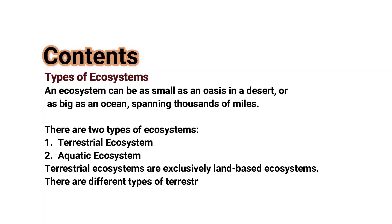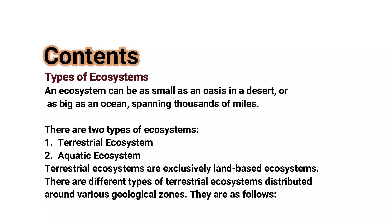Now, the types of ecosystems. An ecosystem can be as small as an oasis in a desert or as large as an ocean spanning thousands of miles. There are two types of ecosystem: the first is the terrestrial ecosystem and the second is the aquatic ecosystem. Let's start with the terrestrial ecosystem. These are exclusively land-based ecosystems, and there are different types distributed around various geographical zones.